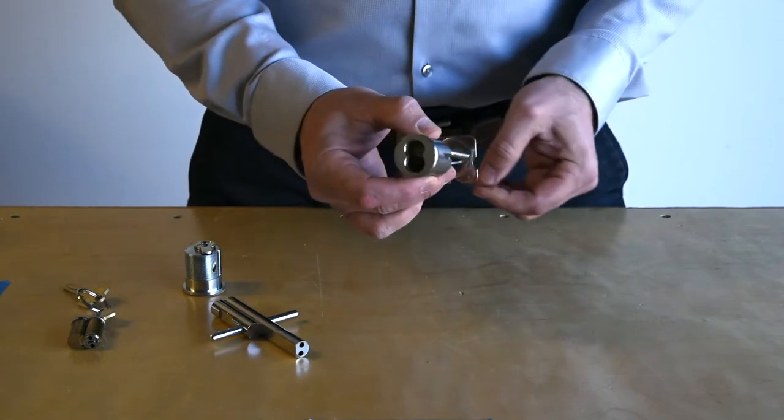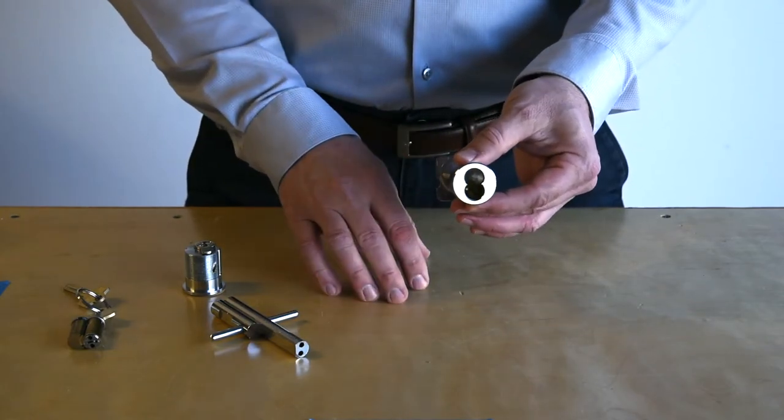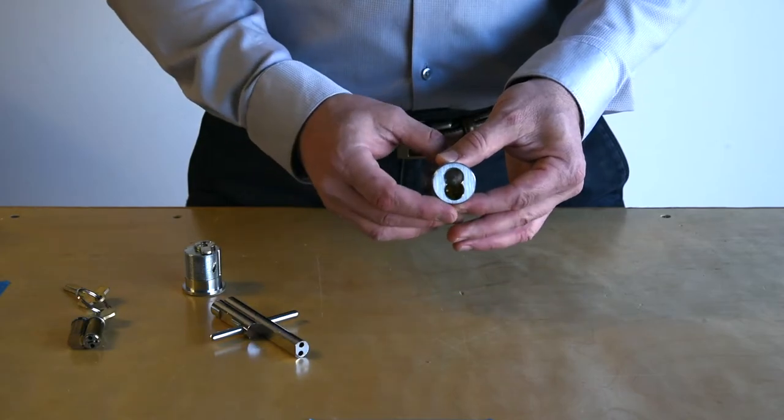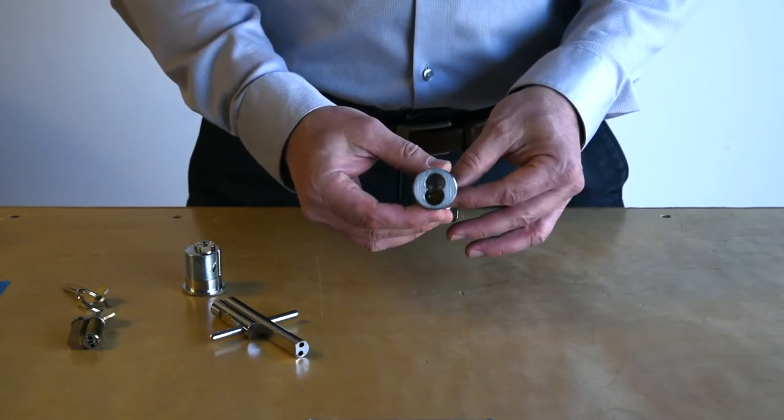The rim cylinder is most commonly used in exit devices and panic bars, typically operated by a tailpiece rather than a cam.